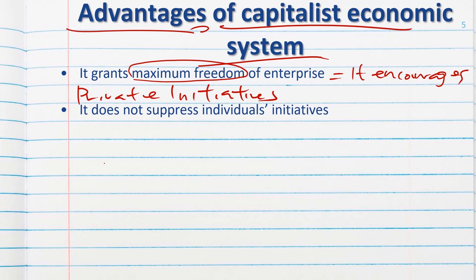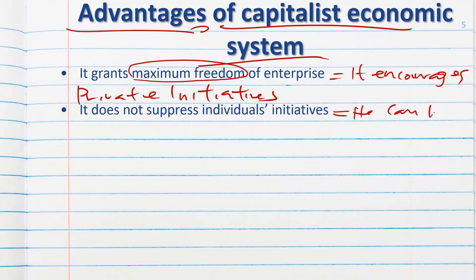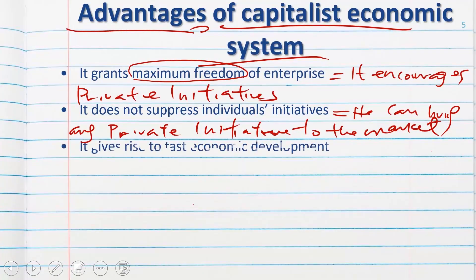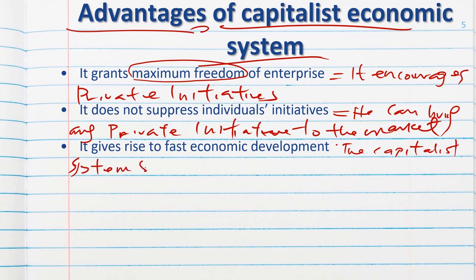Number two, it does not suppress the individual's initiative — an individual can bring whatever initiative he has into the market. Number three, it gives rise to fast economic development, meaning the capitalist system speeds up the rate of development in the country.